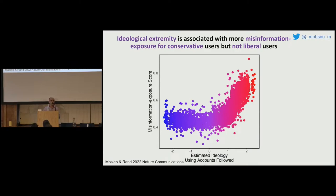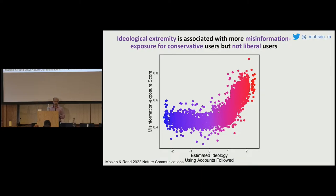We also looked at the relationship between the extremity of political ideology and being exposed to misinformation from political elites. We found an asymmetry: more extreme users are more likely to be exposed to misinformation from political elites for right-leaning users, whereas we did not observe that pattern for liberal users. Being more extreme on the right is associated with higher exposure to misinformation, while this slope is much lower for liberal users.